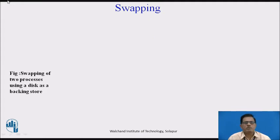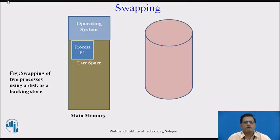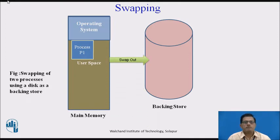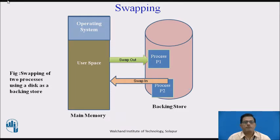Now we will see swapping of two processes using disk as a backing store. First we have the operating system, then user space — both are in main memory. Process P1 is always in main memory. We also have a backing store, which holds separate processes from main memory. Process P2 is contained in the backing store. We then swap P2 into main memory, and P1 is moved from main memory to the backing store.